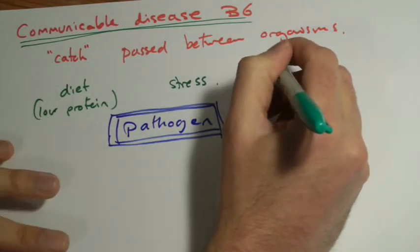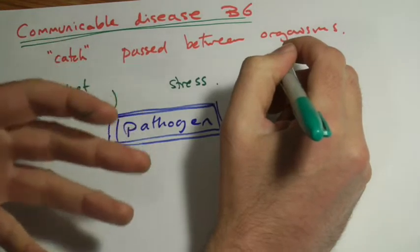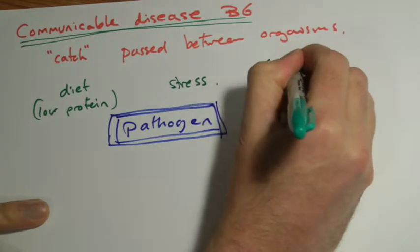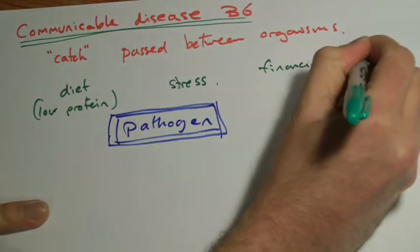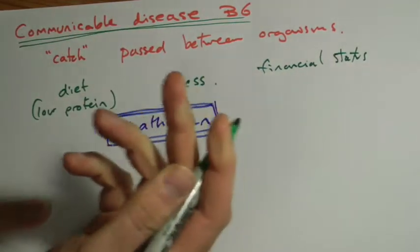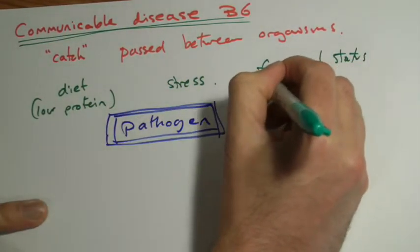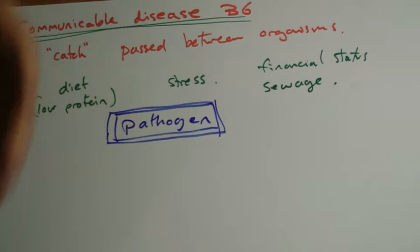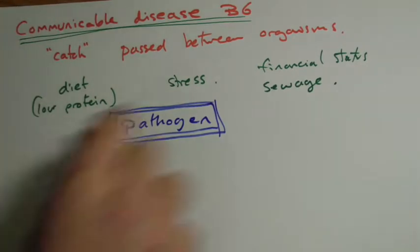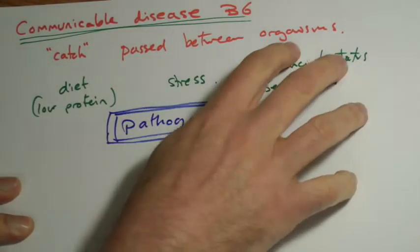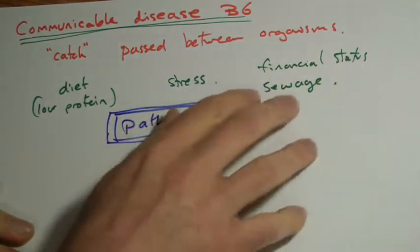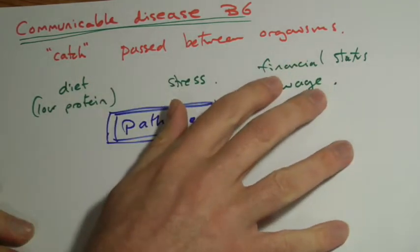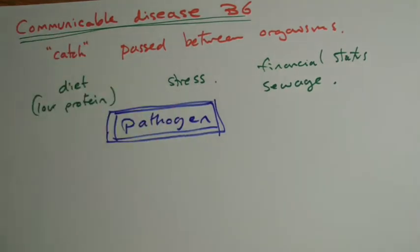But we can also look for factors that, if we look at people who are more likely or who seem to be getting more communicable diseases, you can even look at things like financial status, basically how much money you've got, sort of facilities like just the place you live, have the ability to take away sewage and provide clean water. Mainly this is more to do with less economically developed countries or if there's been a natural disaster, for example.